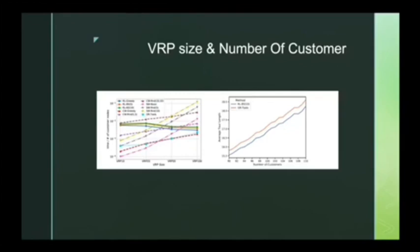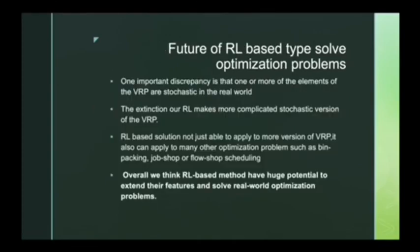We had an analysis on that. The left side is the size of our problem, and the right side is the number of the customers. As we can see from the picture, the growth is linear. So for scalability, the RL solution is much more friendly than the traditional ones.